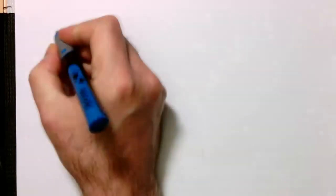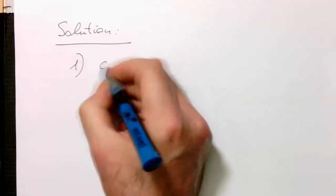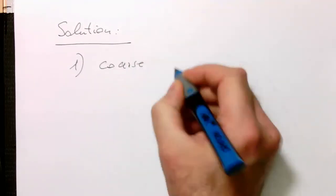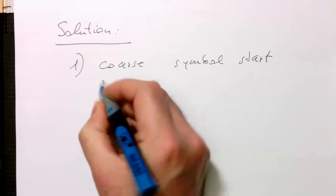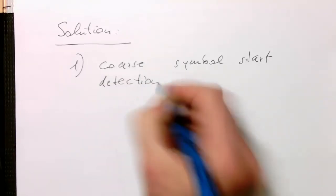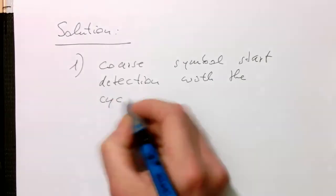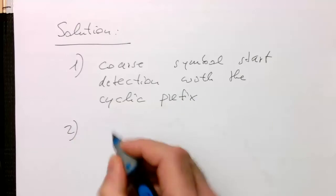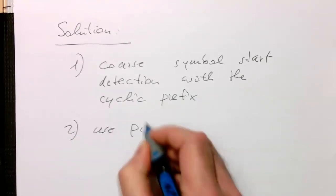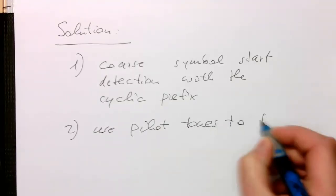So the solution to this is the following. We are first doing a quite coarse symbol start detection with the cyclic prefix. Then we use pilot tones to fine-tune the start.